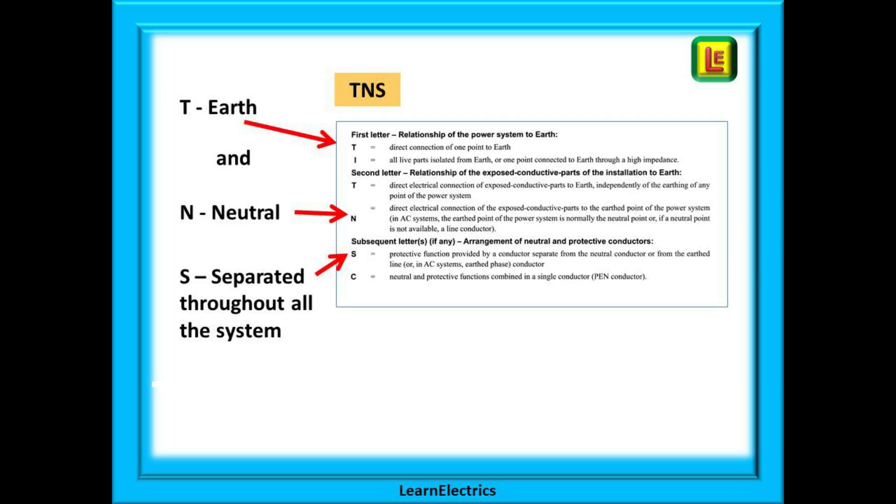Looking at TNS systems first. Take the T from the top section. It tells us this is a connection to earth. N from the second section is referring to the neutral. And finally S from the bottom part tells us that they are separate. So we have earth and neutral separate throughout the system. TNS.